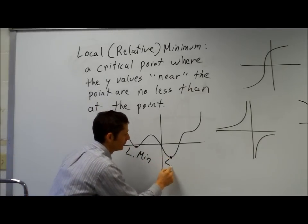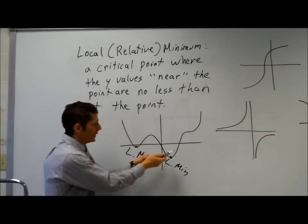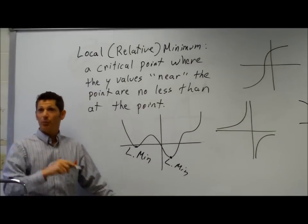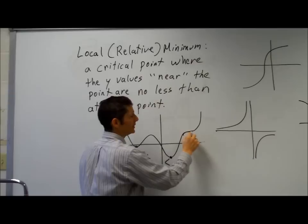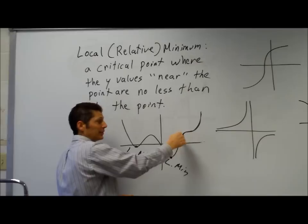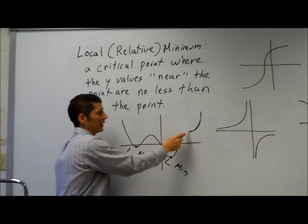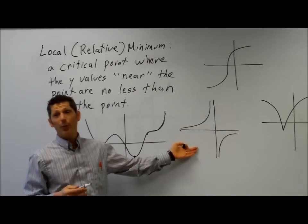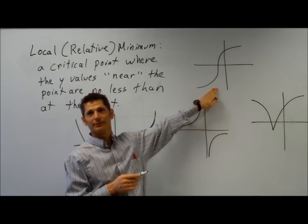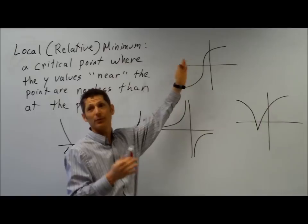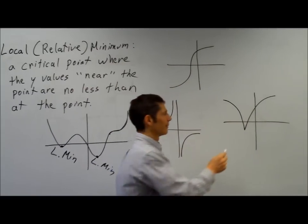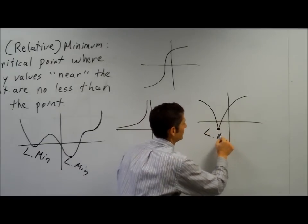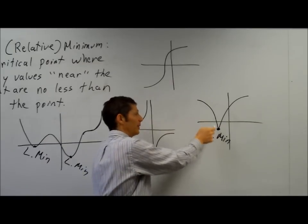One more L-min. Again, if I take a step on either side, I go uphill. How about this guy? No — it's a critical point, but it's a place where the slope is zero, but if I go to one side I'm going down, and if I go to the other side I'm going up. So it's not the lowest point in its area. Any local minimums here? One critical point, but it's not a local minimum. Right here this is a critical point and it's also a local minimum — if I take a step on either side, I go uphill.